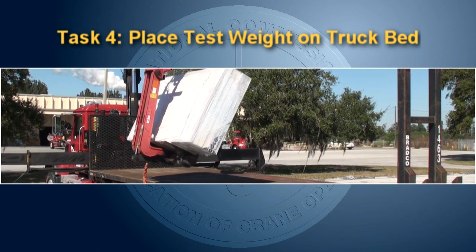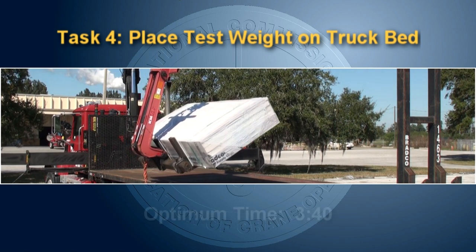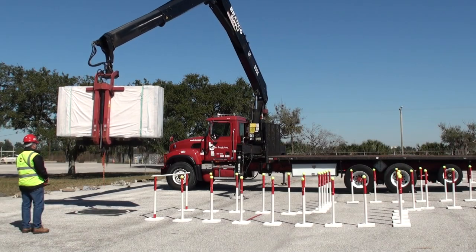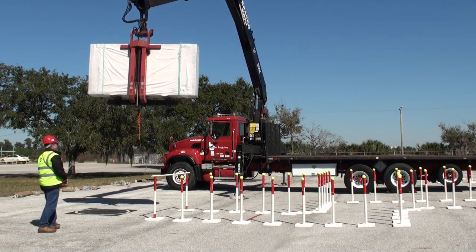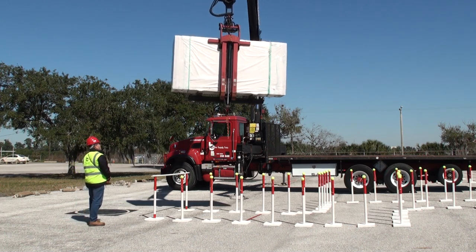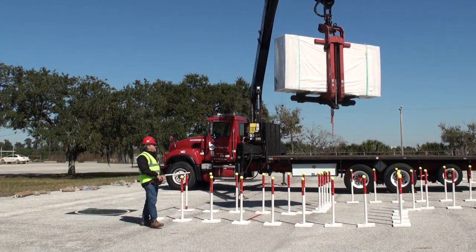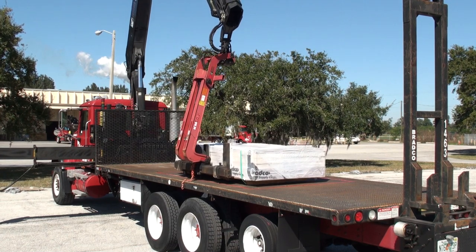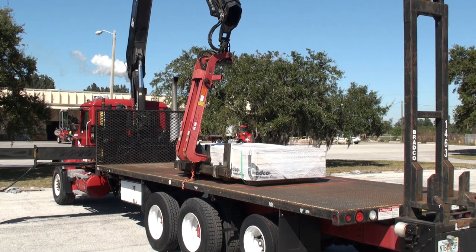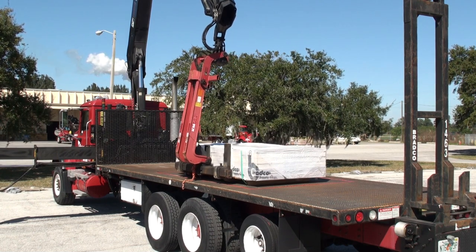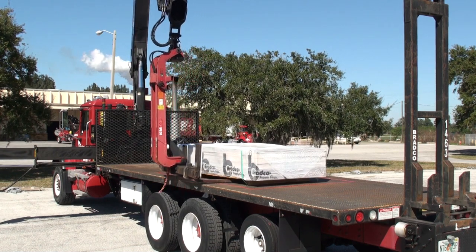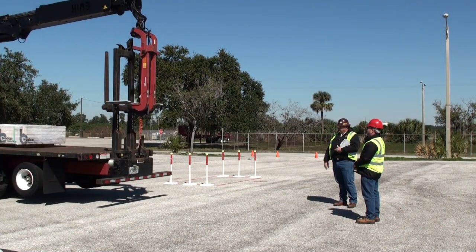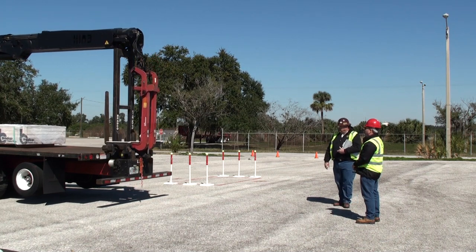Task 4: Place test weight on truck bed. Optimum time: 3 minutes 40 seconds. At the examiner's indication to start, at which point timing will begin, lift the test weight from designated area 4 and guide it over to designated area 1 on the truck bed. Place the test weight on the truck bed inside designated area 1. Then remove the forks and return the fork assembly to the fork boom rest. Time will end once the fork assembly has been properly stowed and you receive the stop signal from the examiner.